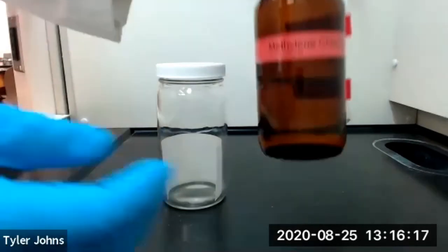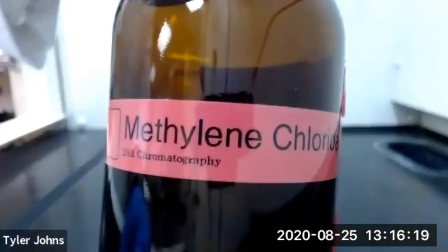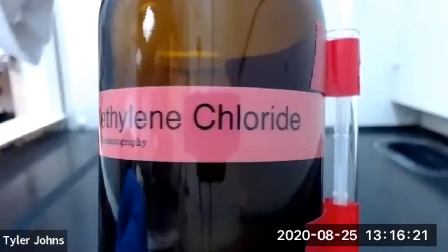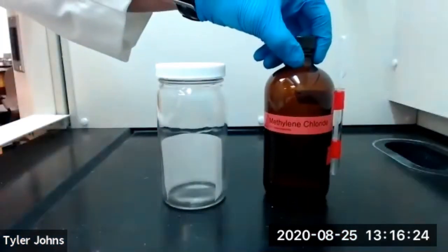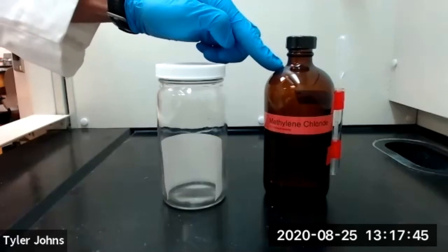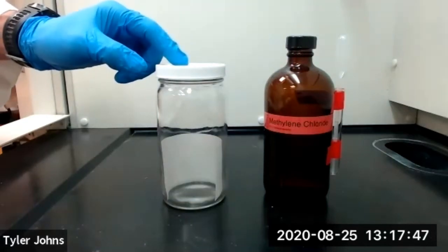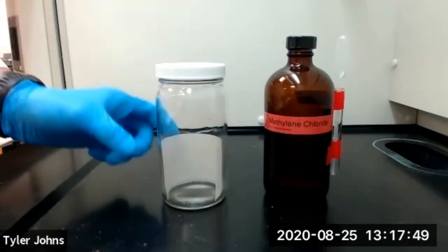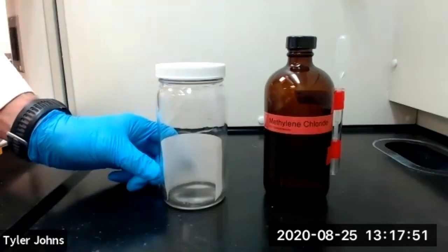The solvent that we will be using for this experiment is methylene chloride. We're going to transfer approximately 5 milliliters of methylene chloride to our development chamber while making sure to completely saturate our filter paper with the methylene chloride.